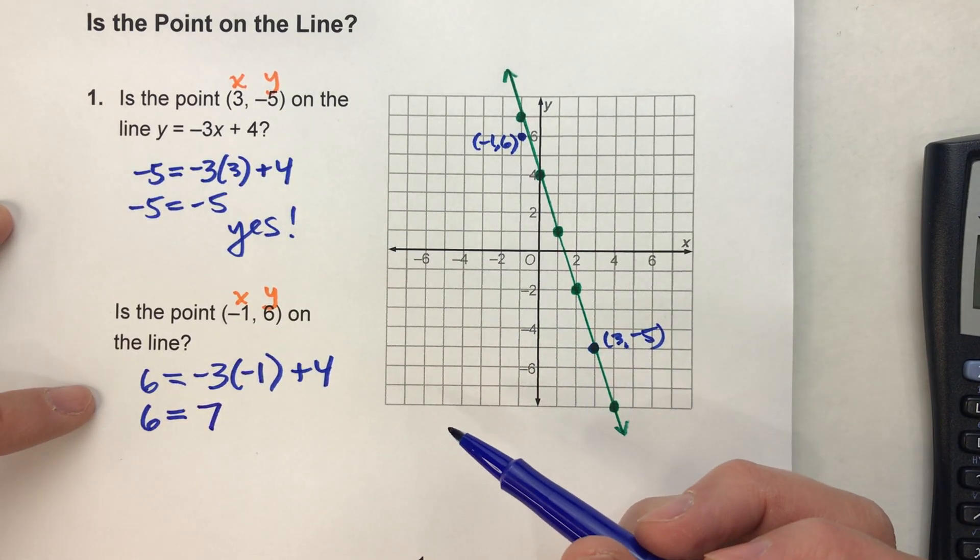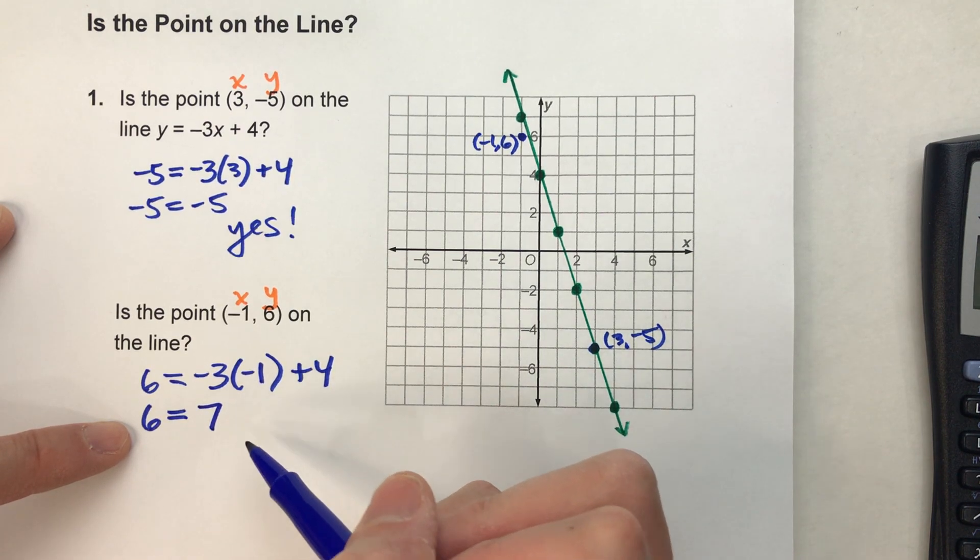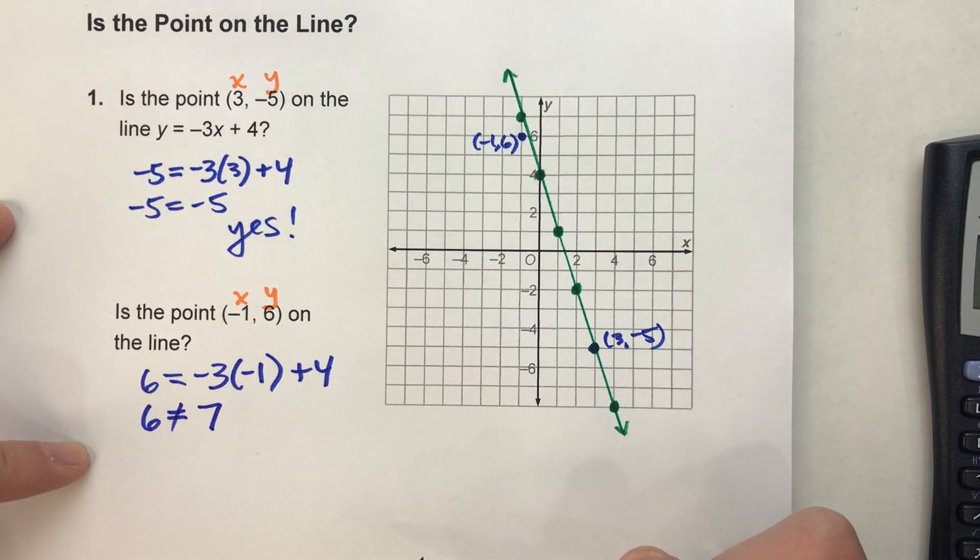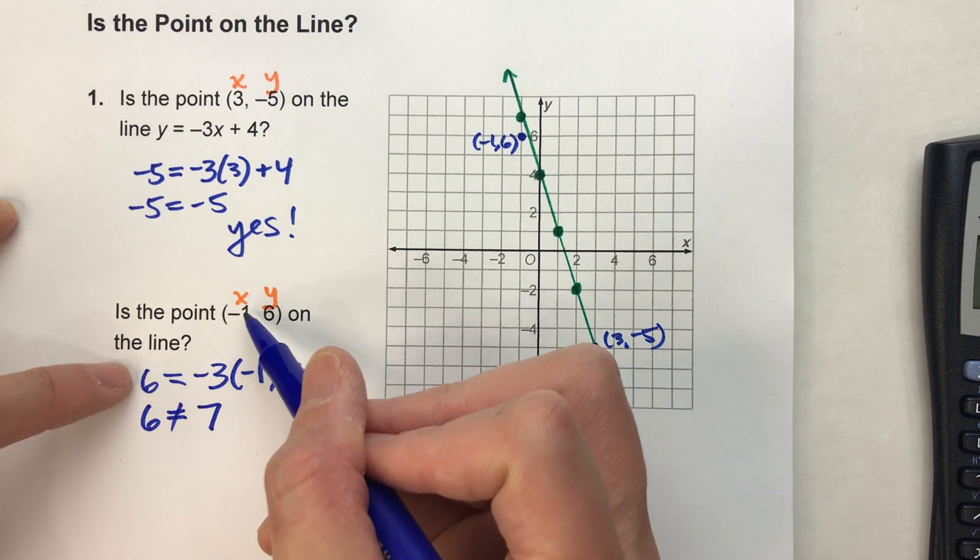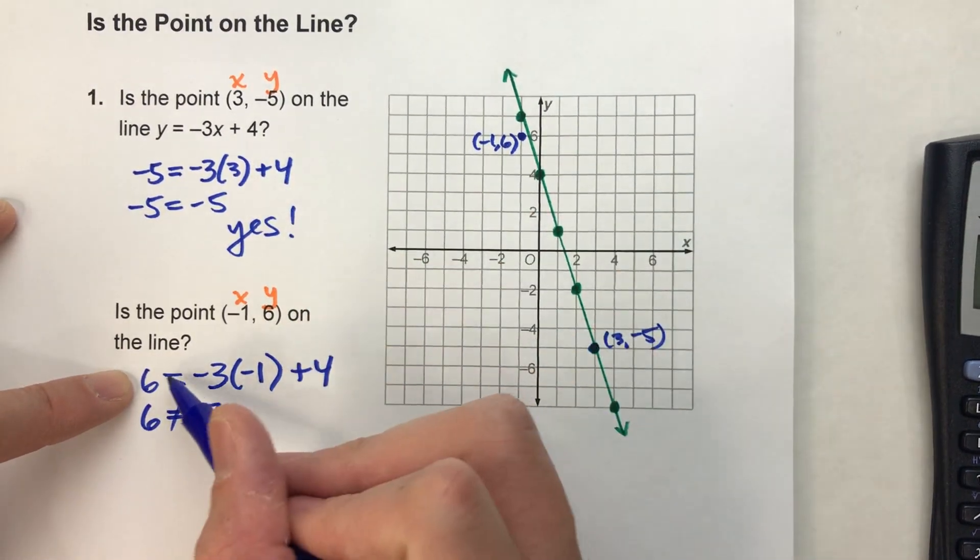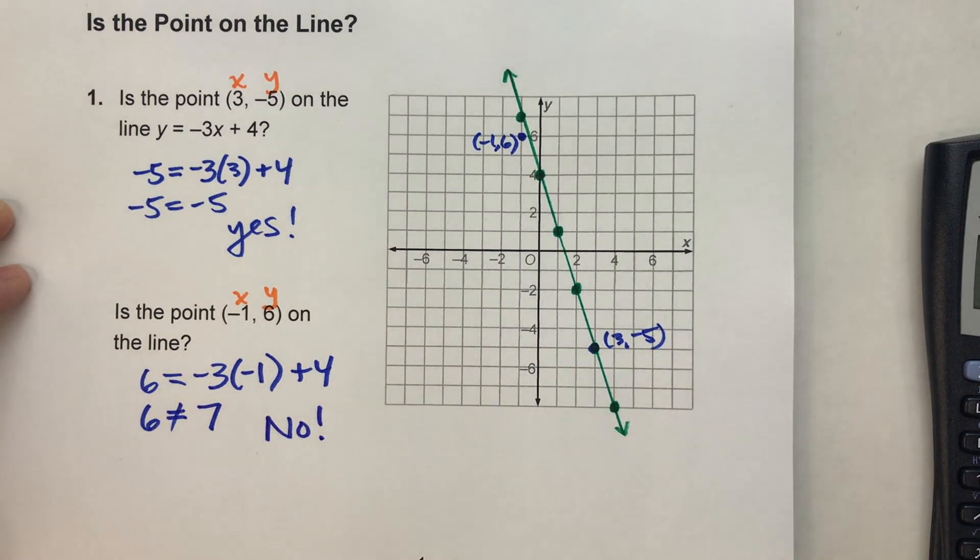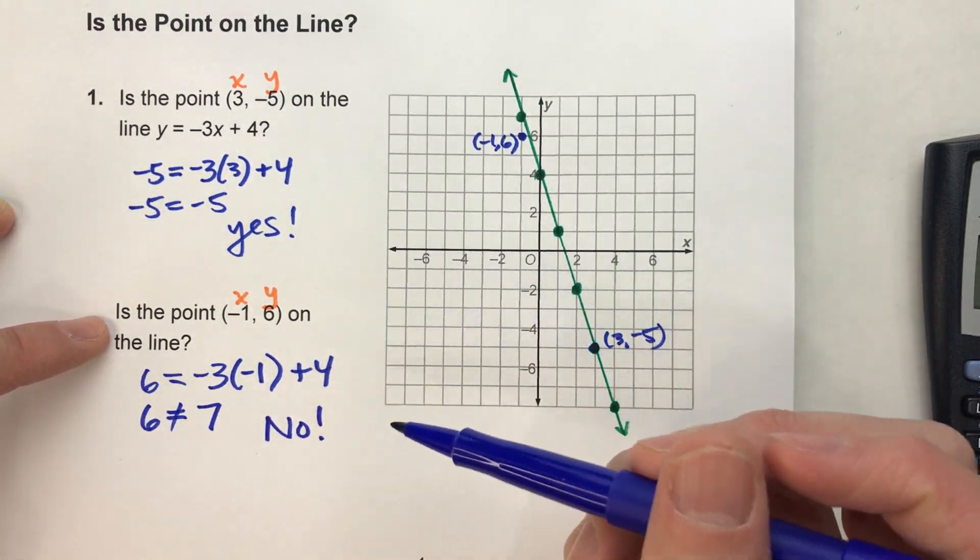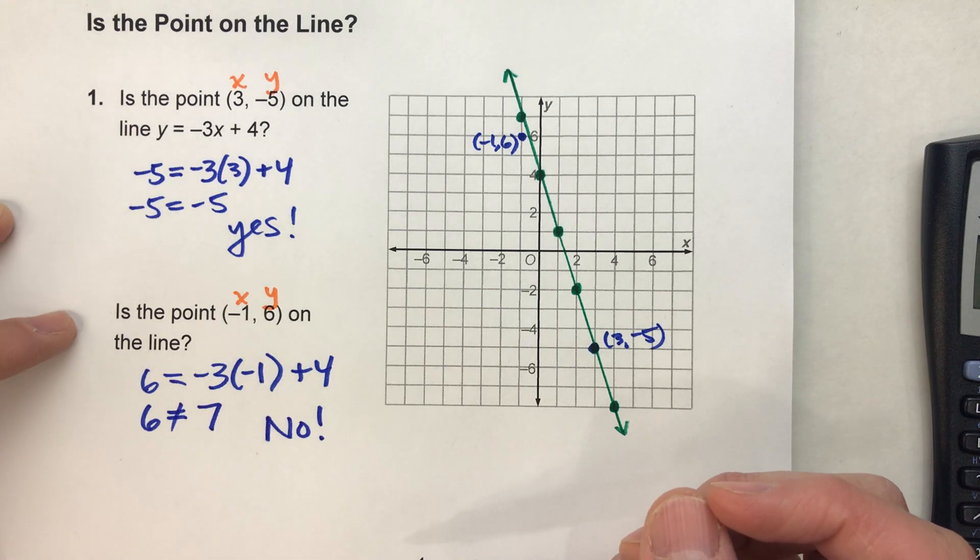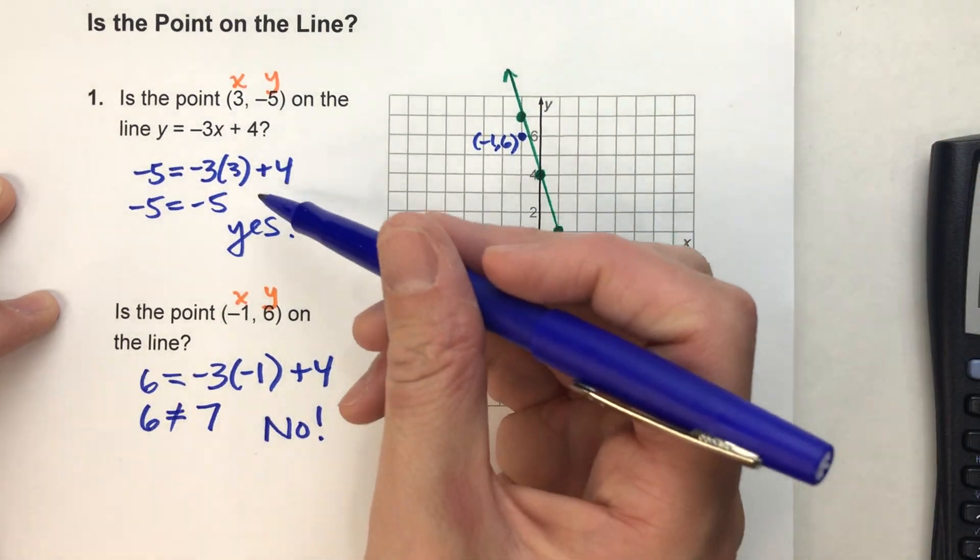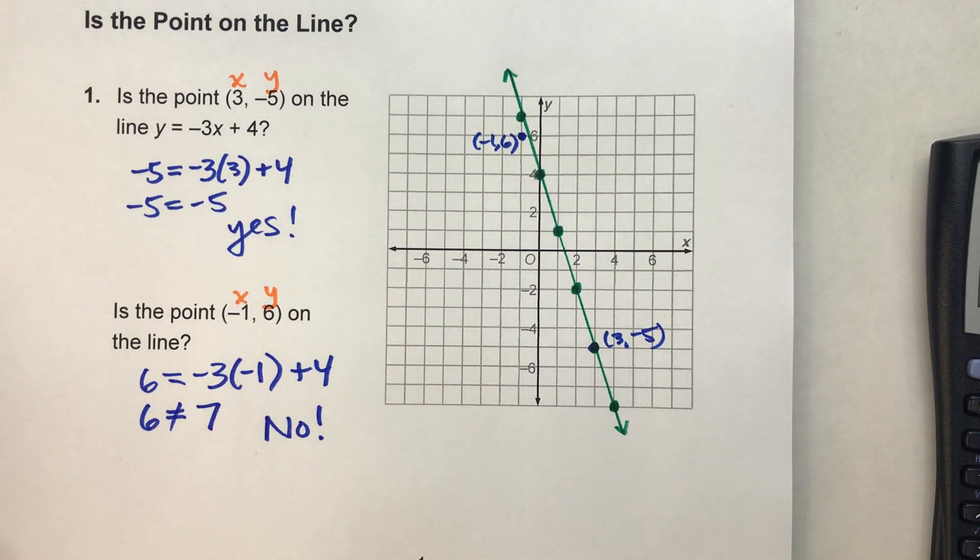Now, look what we have here. 6 equals 7. This is not true. 6 does not equal 7. So, the coordinate, putting the coordinate into my equation didn't work. So, that's how we know, no, this one is not on the line. So, there, I showed you how to do it with a graph, showed you how to do it with algebra. Here, let's do a couple more.